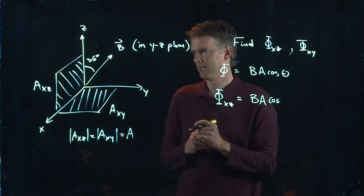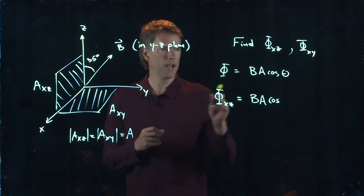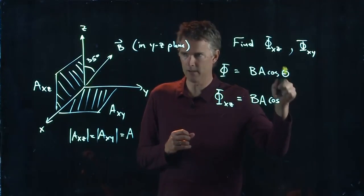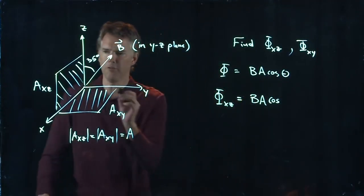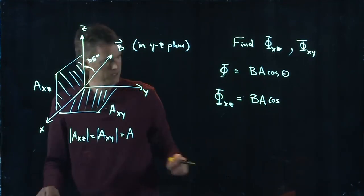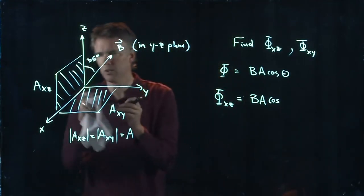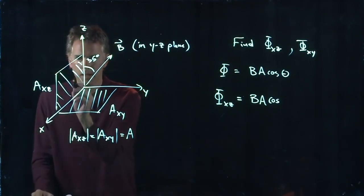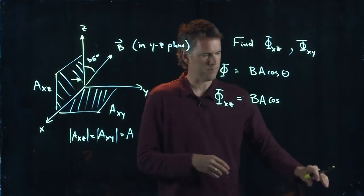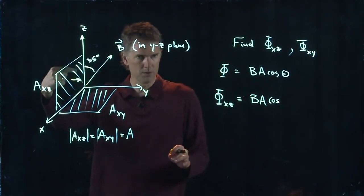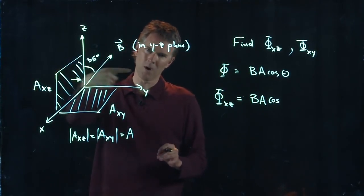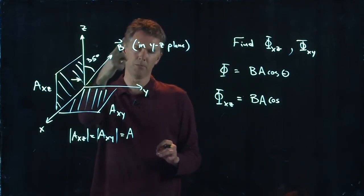And now we have to be a little bit careful. Right? Because the area has a surface normal to it. And that's the relevant angle here. So the surface normal to A_XZ is, in fact, directly to the right. Let me make a little space here. It is directly to the right. That is the normal to that surface.